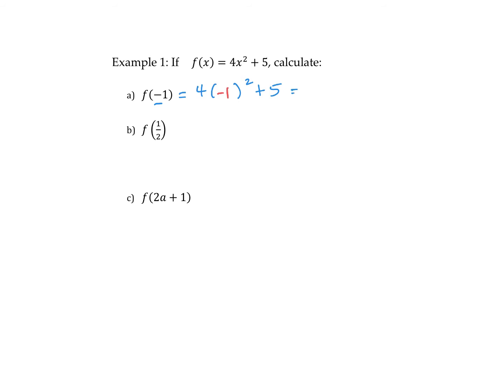If we wanted to evaluate this, remember to follow BEDMAS. You'll notice that when I replaced x with negative 1, I made sure that I put it in brackets and then that bracket is going to get squared. So negative 1 squared is positive 1 times 4 plus 5 is 9.